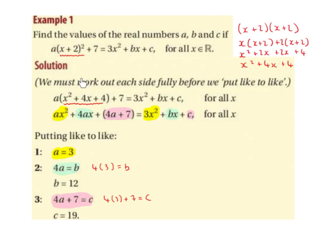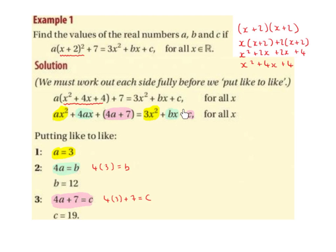We must work out each side fully before we put like to like. We've multiplied out (x plus 2) squared and got x squared plus 4x plus 4, but don't forget there's an a in front, so we have brackets around it. Bring down the plus 7. That equals 3x squared plus bx plus c. Then we multiply in the a: a by x squared is ax squared, a by 4x is 4ax, and a by 4 is 4a. Bring down the plus 7. The right-hand side stays the same: 3x squared plus bx plus c.